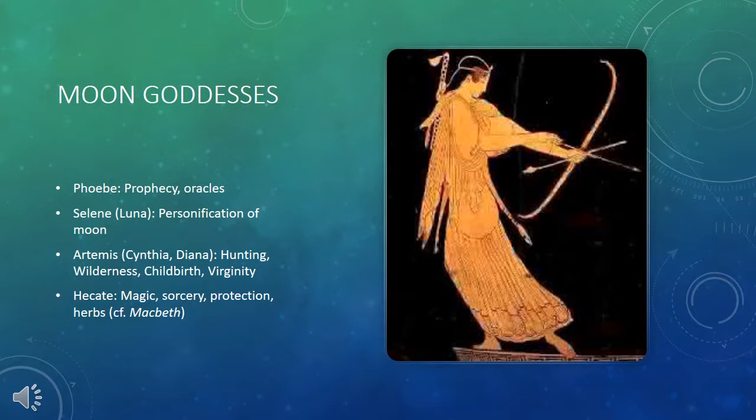There are a number of goddesses associated with the moon. First among these is Phoebe, a Titaness in ancient Greek mythology associated with prophecy, oracles, and knowledge. Then there is Selene, somehow related to Phoebe, also known as Luna, who is the actual personification of the moon — the goddess who drives her moon chariot across the sky during the night, just as during the day a sun god, Phoebus, drives the sun across in a chariot.